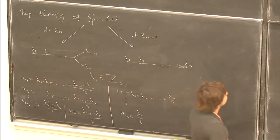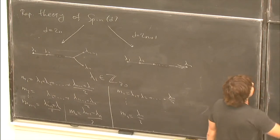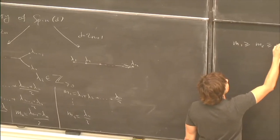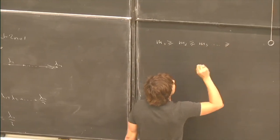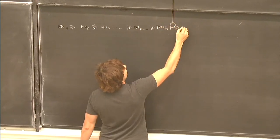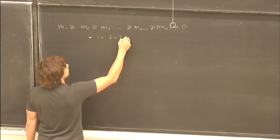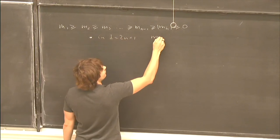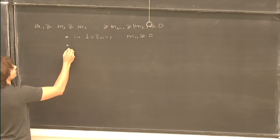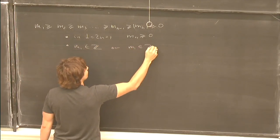The reason why this parameterization is nice is that since all lambdas are non-negative integers, the conditions on M_i are that M_1 ≥ M_2 ≥ M_3 ≥ ... ≥ |M_N|, which is of course non-negative. An extra condition in the odd case is that M_N is also non-negative. Besides that, we have two options: either all M_i are integers or all are half-integers.